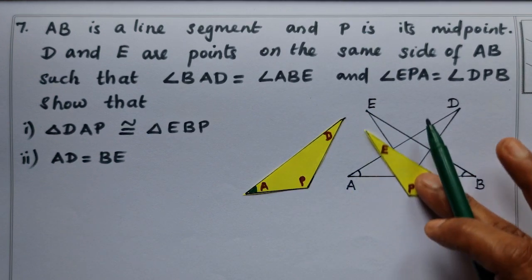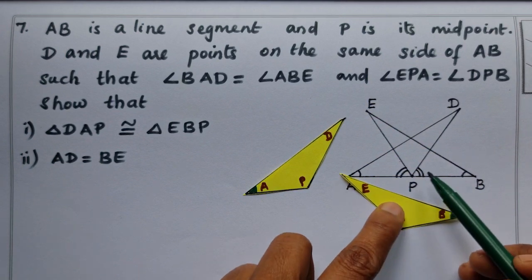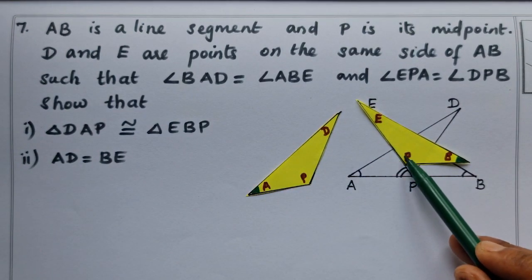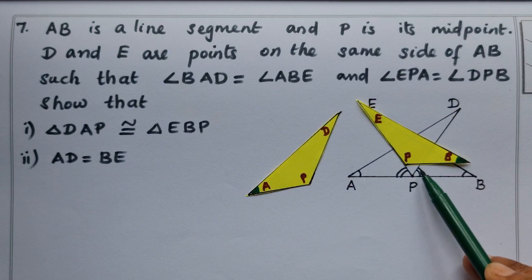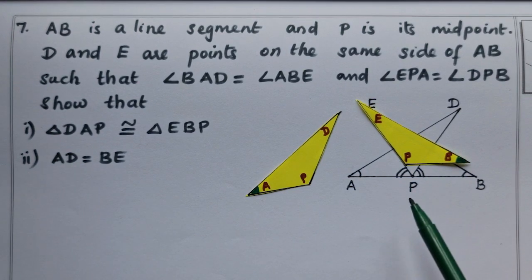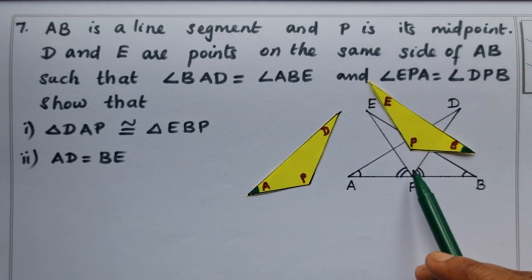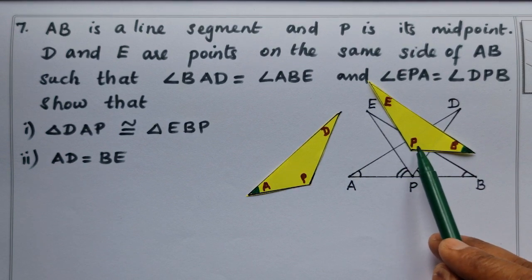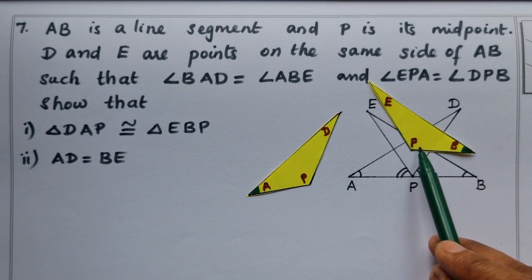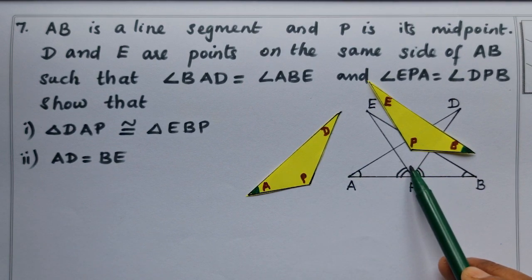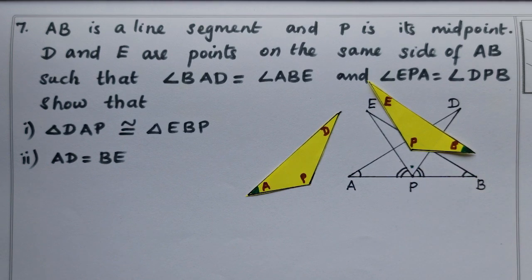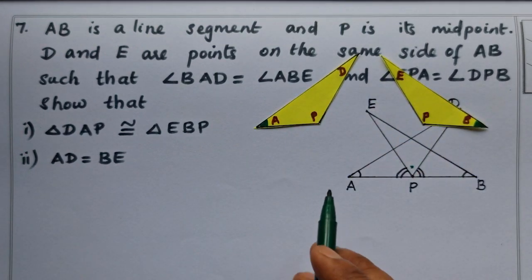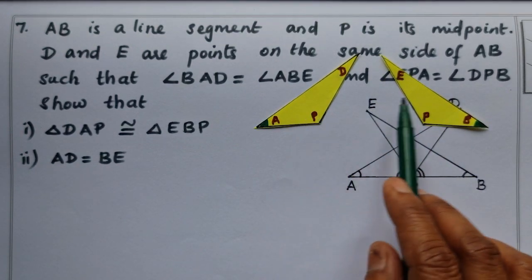Angle EPA equals angle DPB. This angle EPA equals angle DPB. We will add this angle to the other angle. This angle, when added, gives us the full angle. Then the resulting angle is equal to the other side's angle.